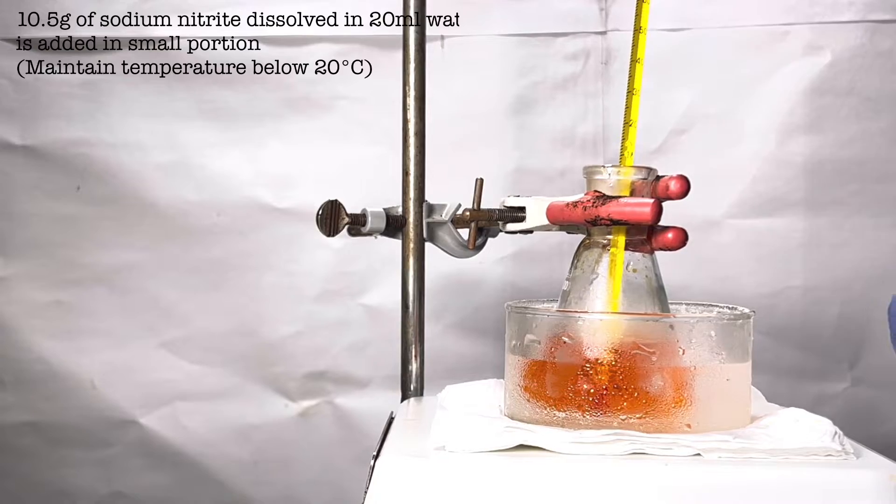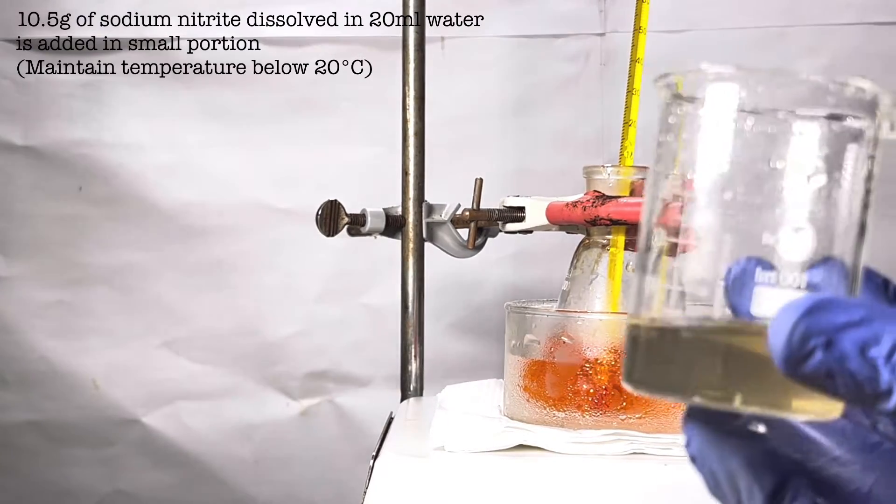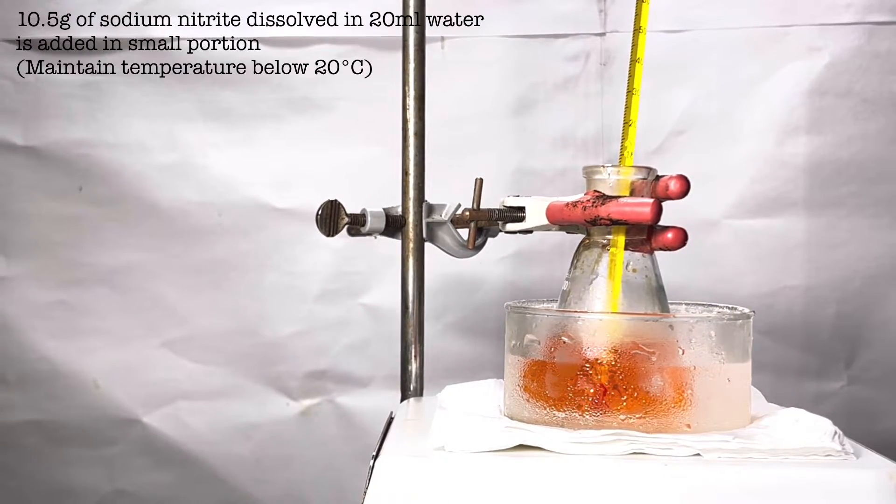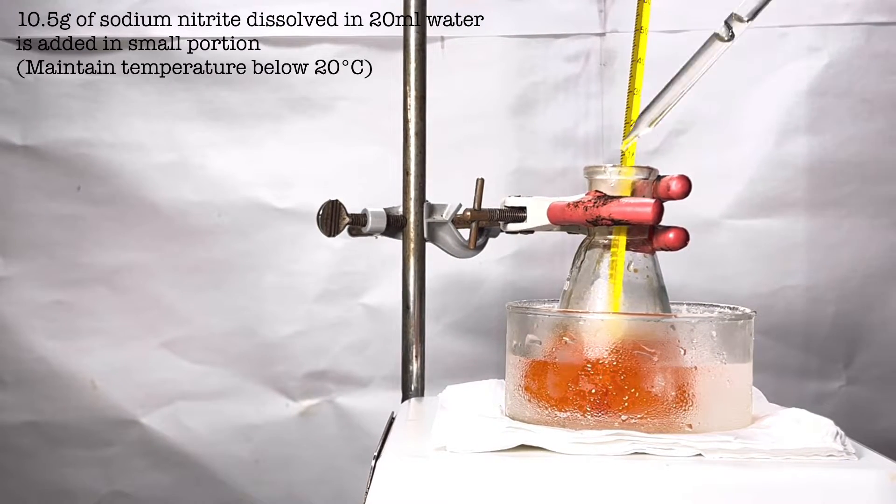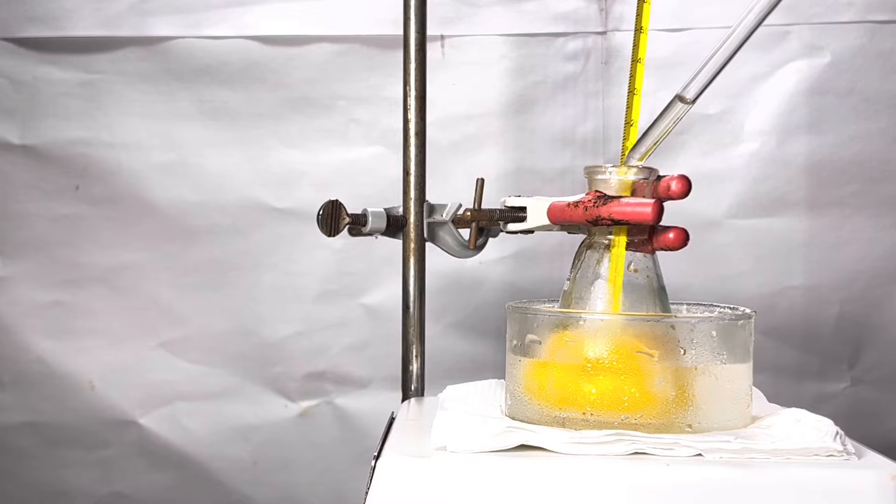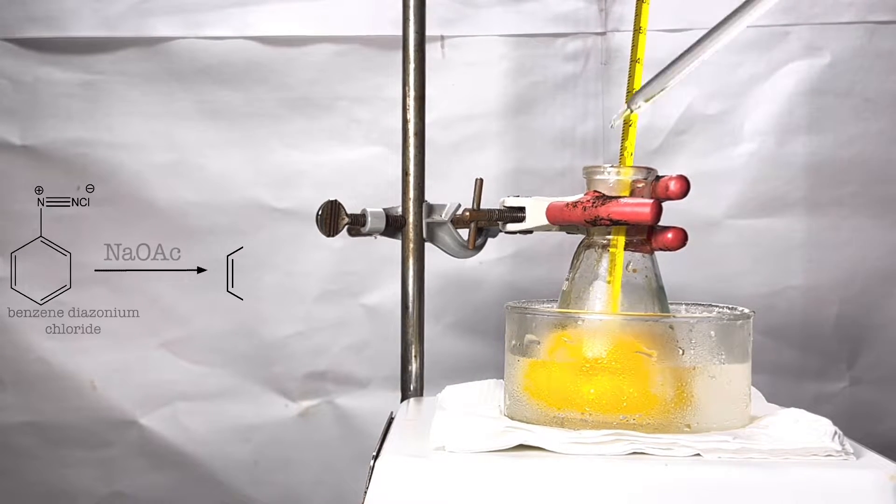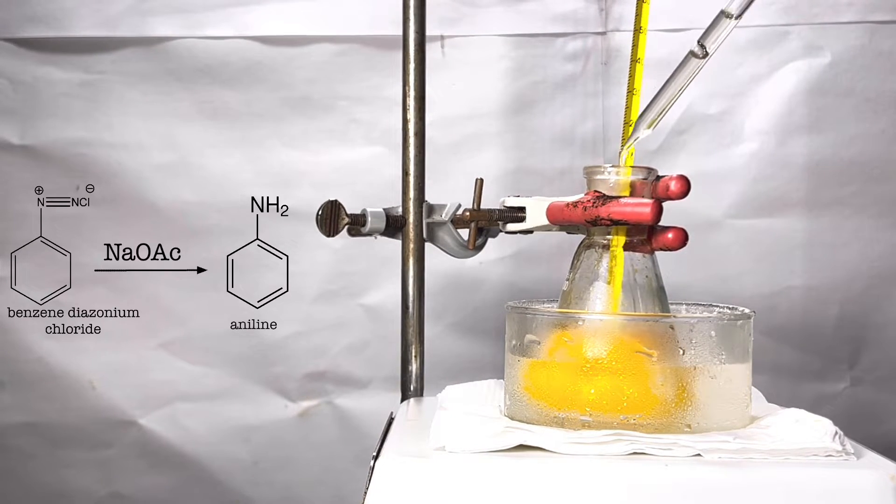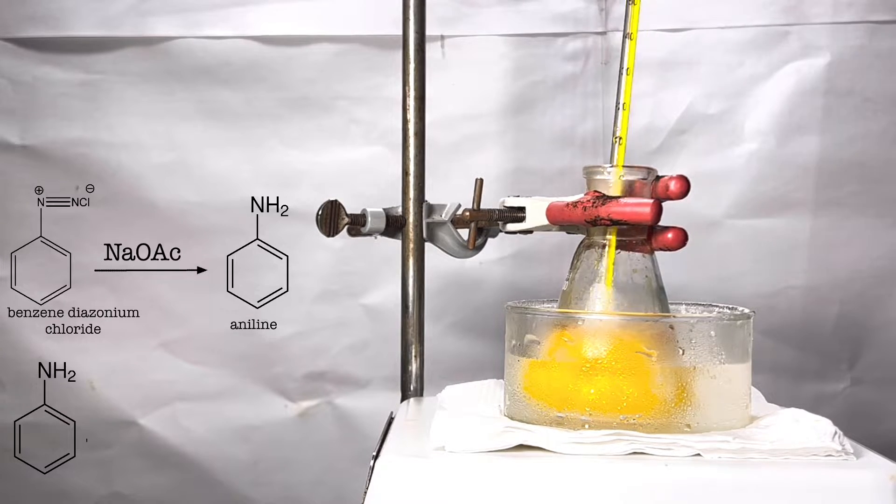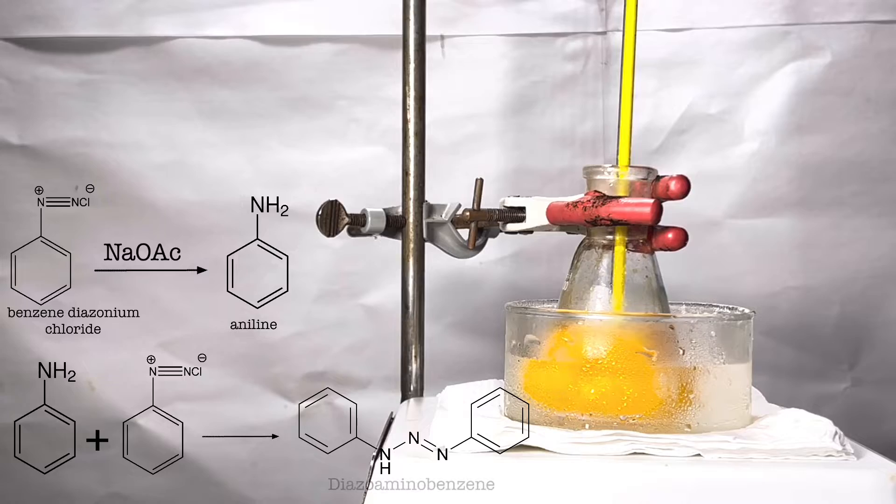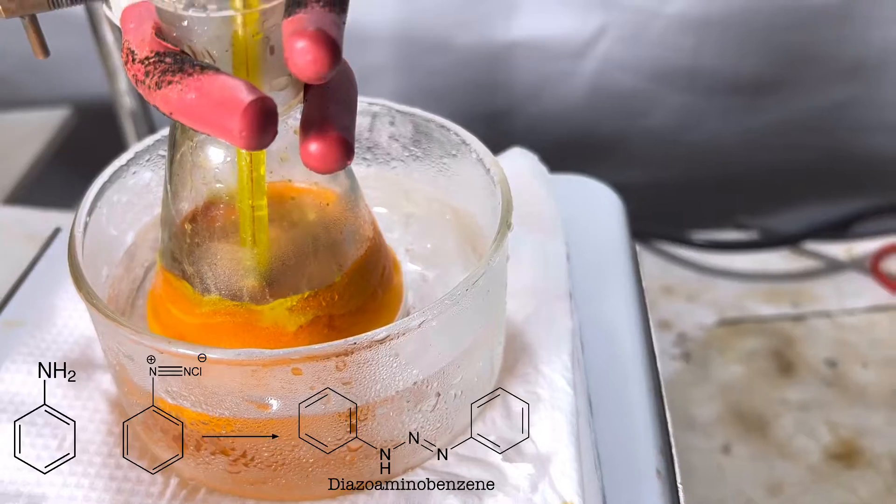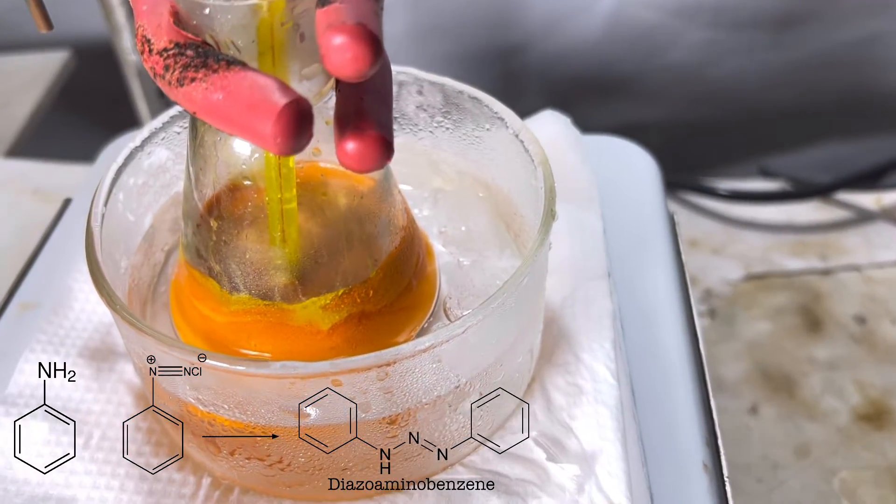Add a solution of chilled sodium acetate containing 10.5 grams of sodium acetate in 20 ml of water. This should be also added slowly using a glass pipette. This causes the precipitation of the product diazoaminobenzene. Excess of acid that is 0.5 to 1 equivalent to the diazonium salt maintains the proper condition of acidity required to stabilize the diazonium salt solution.